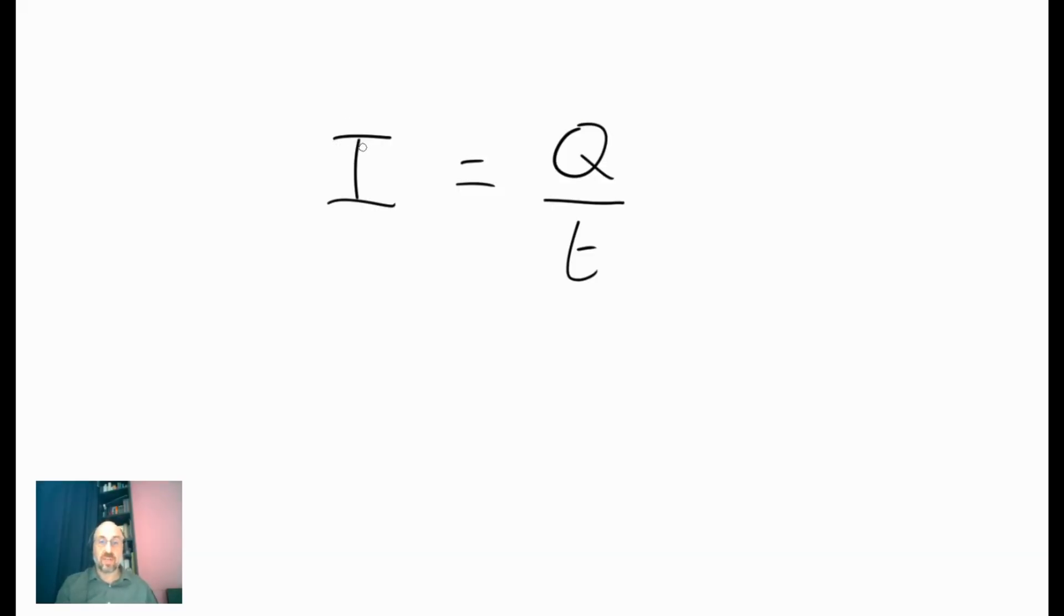Here's the equation for electric current. We say that I equals Q divided by T. Q stands for the amount of charge that has passed a particular point, and that's measured in coulombs. T stands for time. In other words, it's going to be measured in seconds, and it tells us how long it took for this amount of charge to flow. And if we divide the amount of charge that's flown, divide that by the time, that will tell us what the current is here.